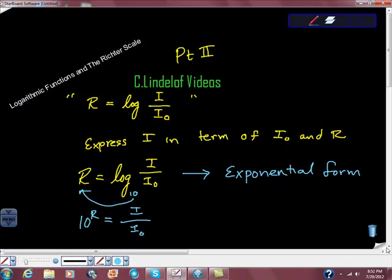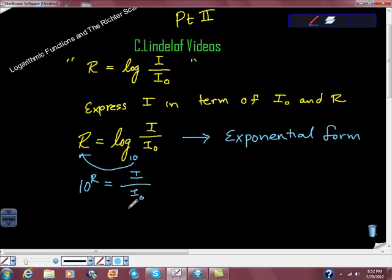So what I'm going to do now is multiply both sides by I sub zero. So I'm going to get the initial intensity times 10 to the R power is equal to the found intensity.